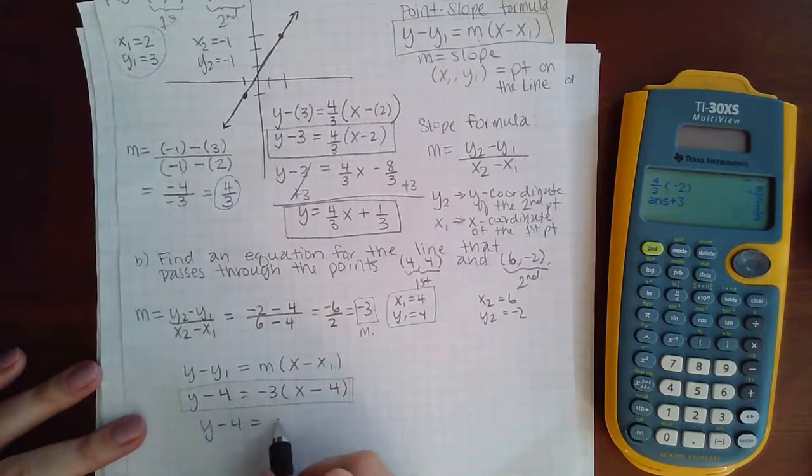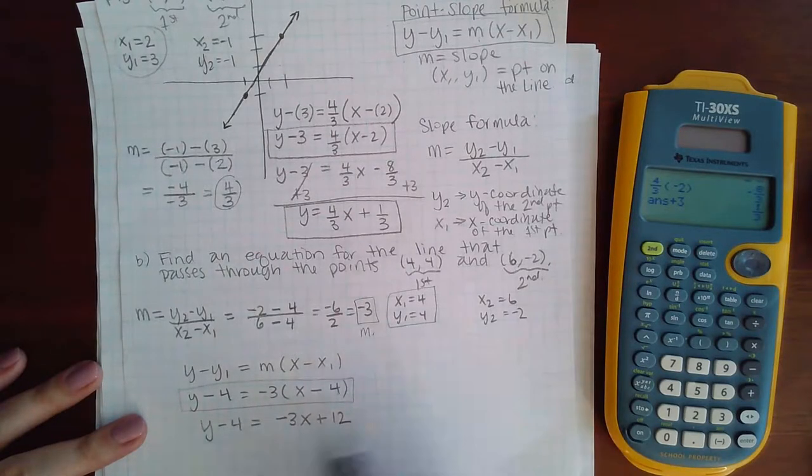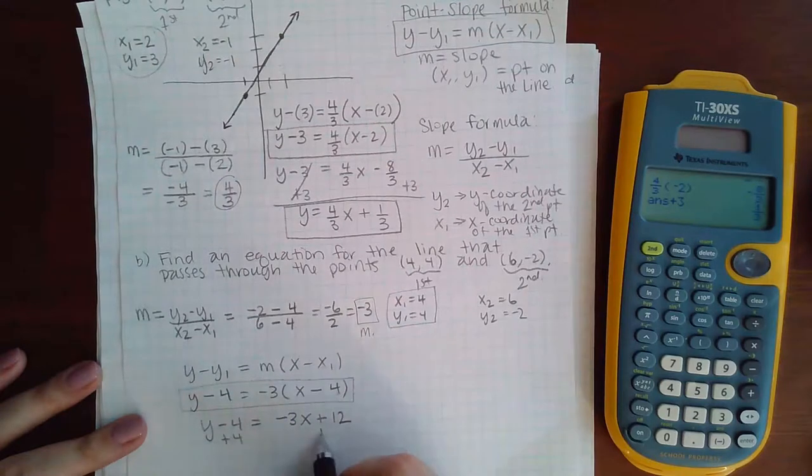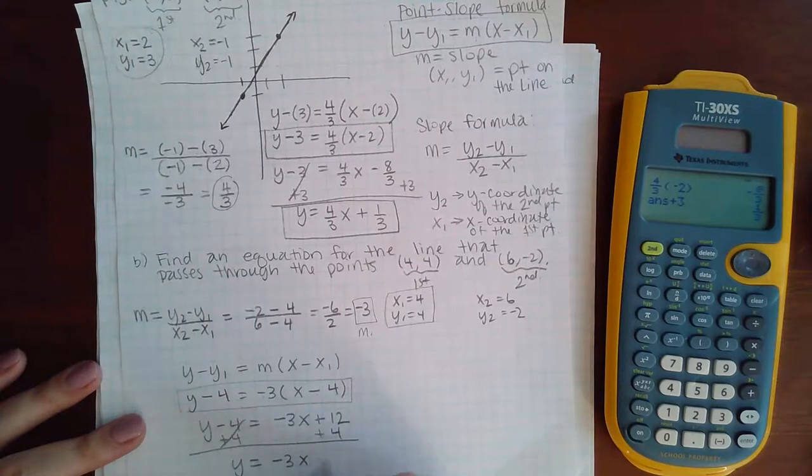So y minus 4 equals negative 3x. A negative 3 times a negative 4 is going to be a positive 12. And then finally, I just add 4 to get the y all by itself, and I get negative 3x plus 16.